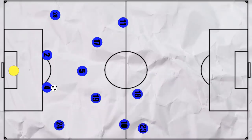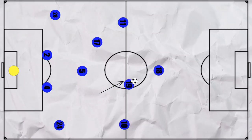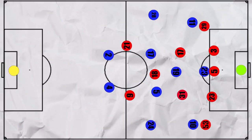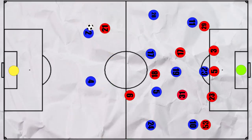Once Giroud came on, Chelsea went more direct, with Mount pushing high alongside him for the knockdown, but they didn't have much luck. On the transition, United did look to take advantage of the spaces left behind by Chelsea's full backs, although the centre backs were often able to deal with this.